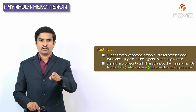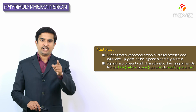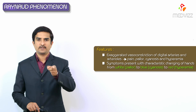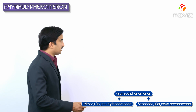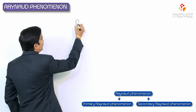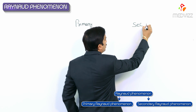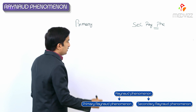Raynaud's phenomena occurs because of intermittent arteriolar vasoconstriction of the digits, involving digital arteries and arterioles, responsible for symptoms like pain, pallor, cyanosis, and hyperemia. Based on clinical features, presentation, and underlying pathology, Raynaud's phenomena has been categorized under two headings: primary and secondary.